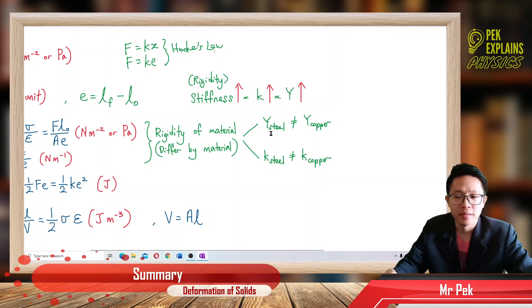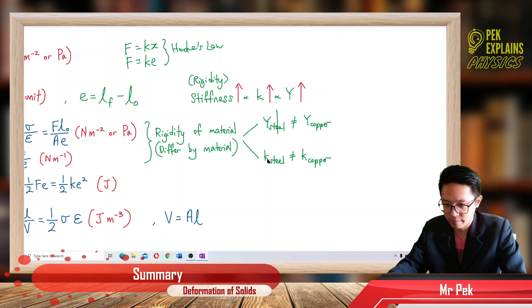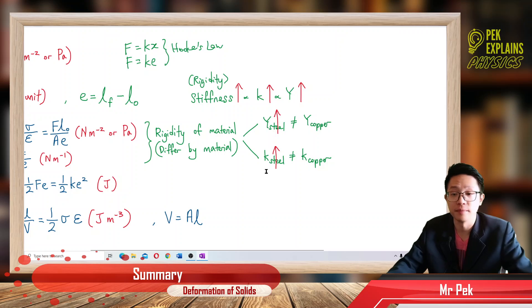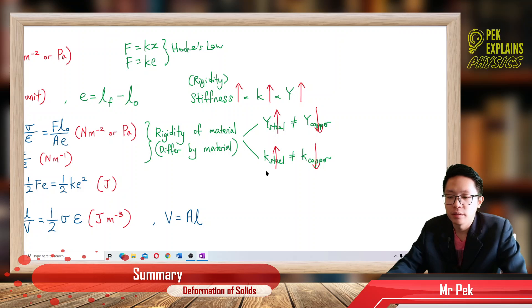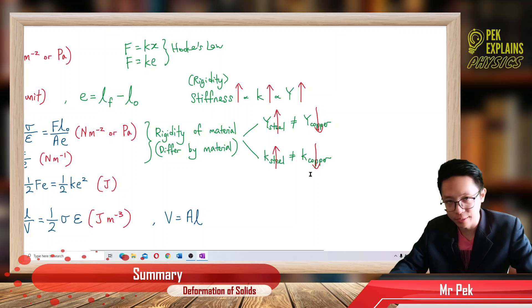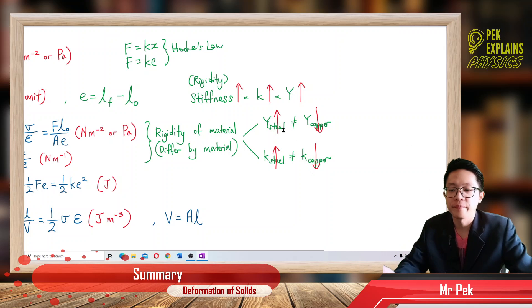Which one has higher Young's modulus and force constant? Of course the tougher one. Steel is more rigid, more tough, more stiff, so it has higher Young's modulus and higher force constant. Copper has lower Young's modulus and lower force constant because it is a softer metal — softer than steel. So the Y and K values are lower for copper.